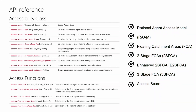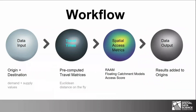There's also a recently released package called ACESO that implements the floating catchment area models and the access score, but not RAM. Here is the workflow used by the package to generate results. You input origin and destination data, which are then used to compute travel times between them. Those travel times are the input for generating the spatial access metrics that are then appended to your points of origin.